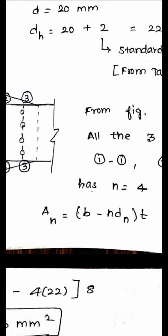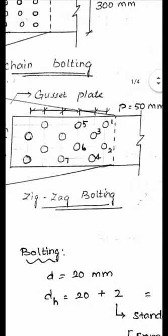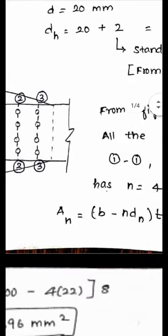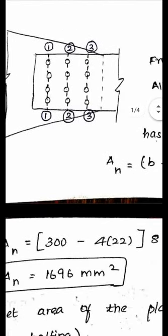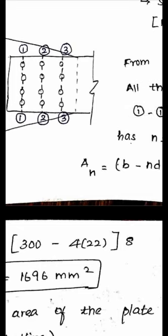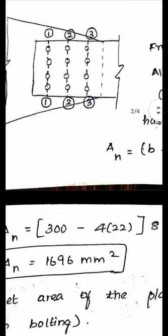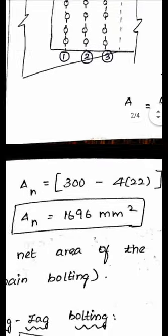N, the number of holes along the path line, is 4. The width of the plate given in the problem is 300 mm. Substituting: An = (300 minus 4 × 22) × 8 mm thickness. I got the net area as 1696 mm². This is the net area of the plate for the chain bolting type.